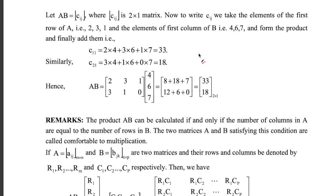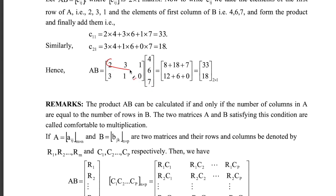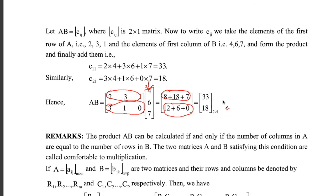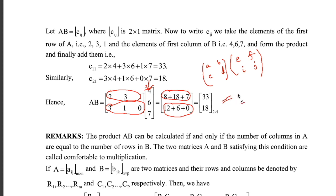For a general 2×2 multiplication, suppose you have matrix A=[a, b; c, d] multiplied by B=[e, f; i, j]. You compute: R1C1 = ae+bi, R1C2 = af+bj, R2C1 = ce+di, R2C2 = cf+dj. The first row of A multiplies each column to fill the first row of the result; the second row of A multiplies each column to fill the second row.